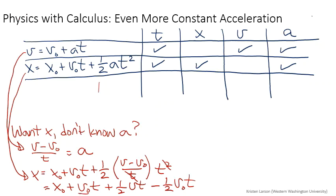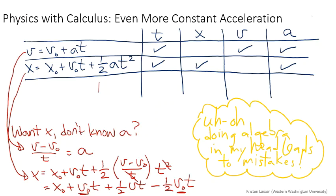So I get x0 plus v0 t plus one-half v times t minus one-half v0 times t. I see that I have two factors of v0 here, two factors of v0, so I'm going to simplify that, and I'll just write it back up in the chart.